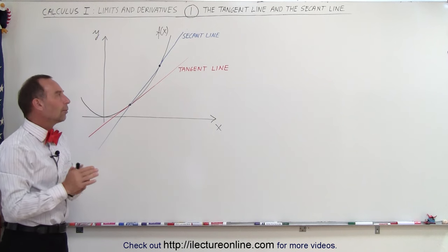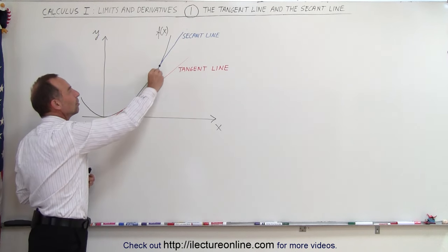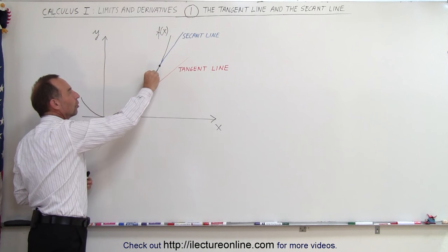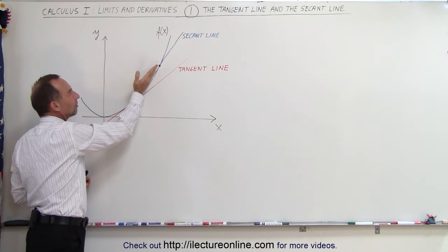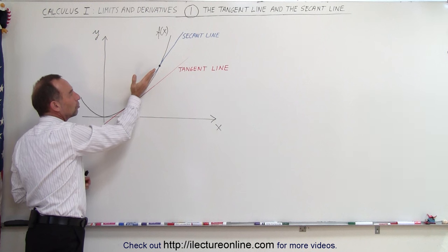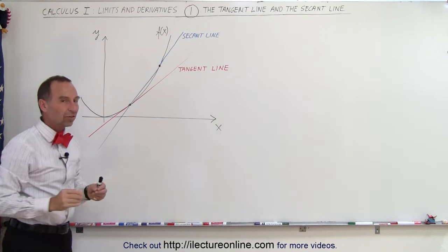What we're going to see later on is what happens when you bring the second point closer and closer and closer to the first point. Then you can see that the slope of the secant line will much more align with the slope of the tangent line.